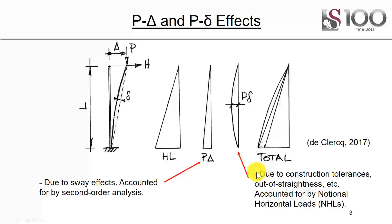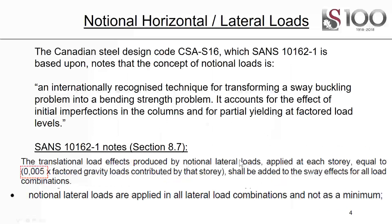You must think very carefully about the fact that we're going to calculate a load to simulate an imperfection. The two are not the same things — we are doing almost a fudge factor, something just to make it work out. The Canadian Steel Code CSA-S16, which our Steel Code SANS-10162 Part 2 is based upon, notes that the concept of notional loads is an internationally recognized technique for transforming a sway-buckling problem into a bending strength problem. It accounts for the effect of initial imperfections in the column and for partial yielding at factored load levels. We are transforming sway-buckling into bending strength and converting imperfections into loads.